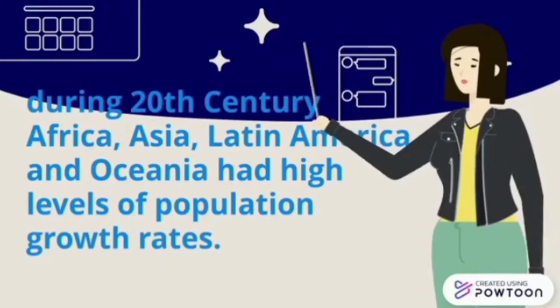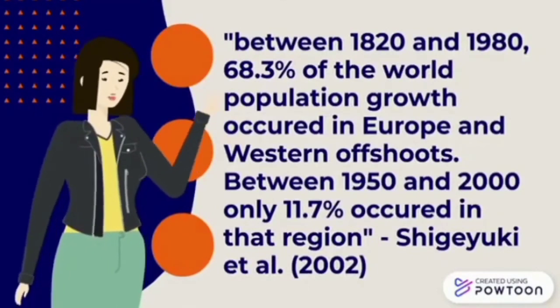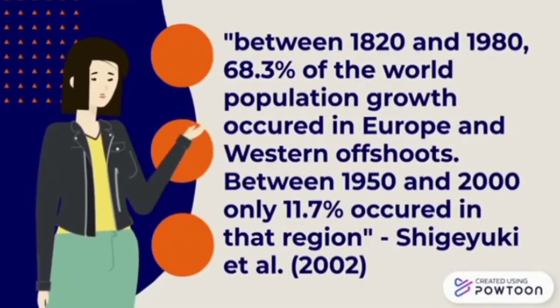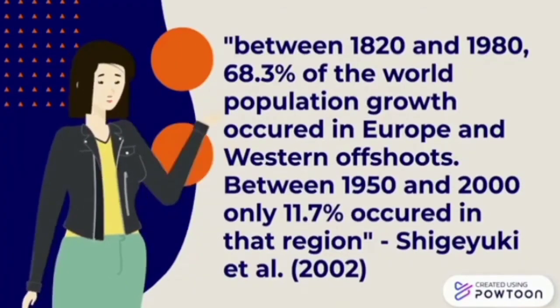As of November 7, 2021, Oceania's population is equivalent to 0.54% of the total world population. Between 1820 and 1980, 68.3% of the world population growth occurred in Europe and Western Australia. Between 1950 and 2000, only 11.7% occurred in that region, according to Shigeyuki et al., 2002.